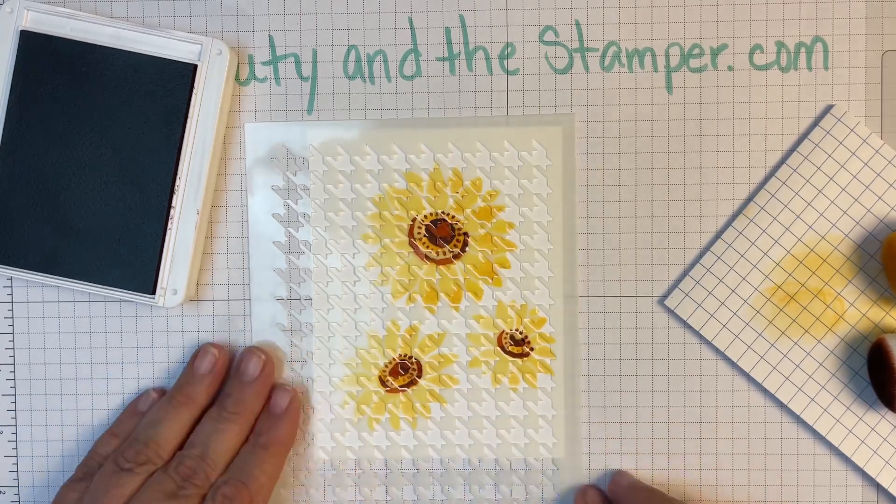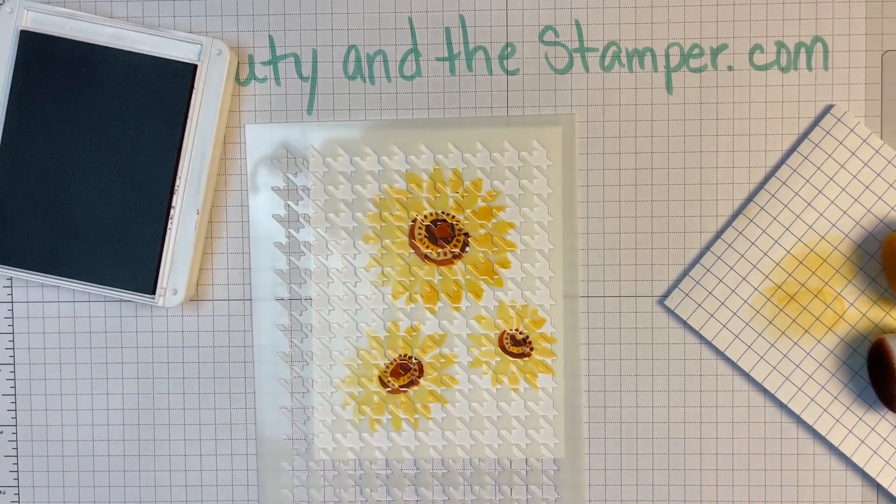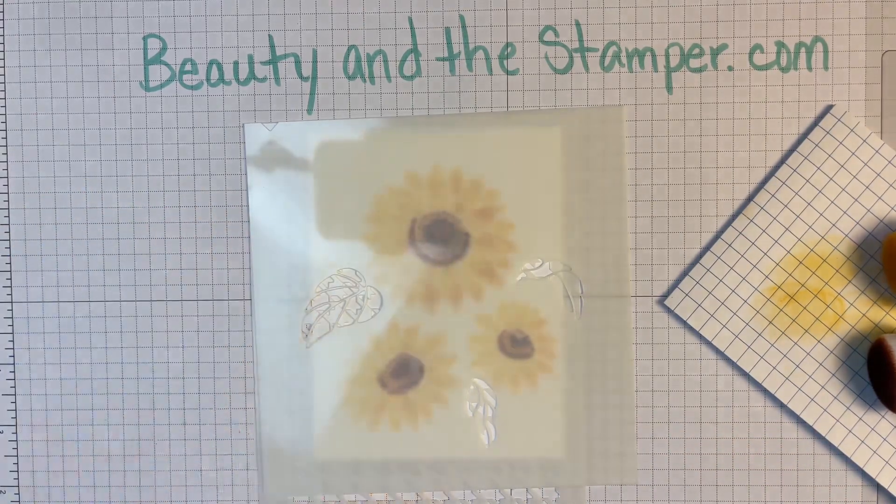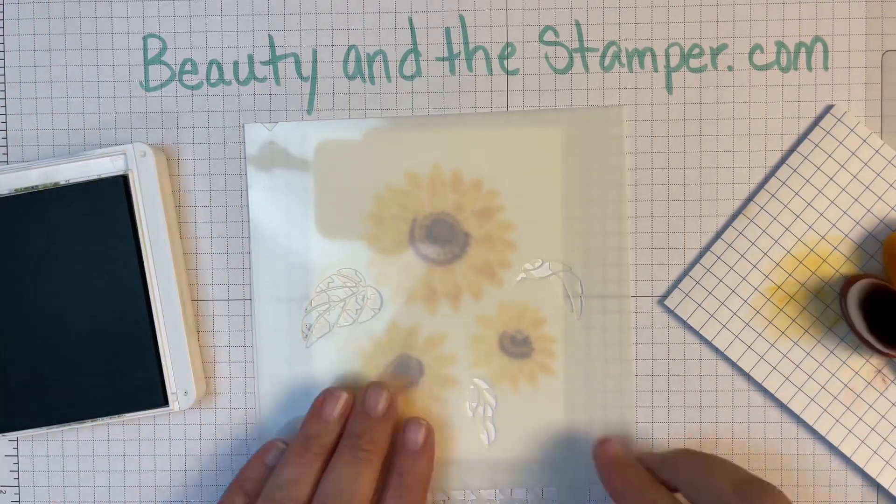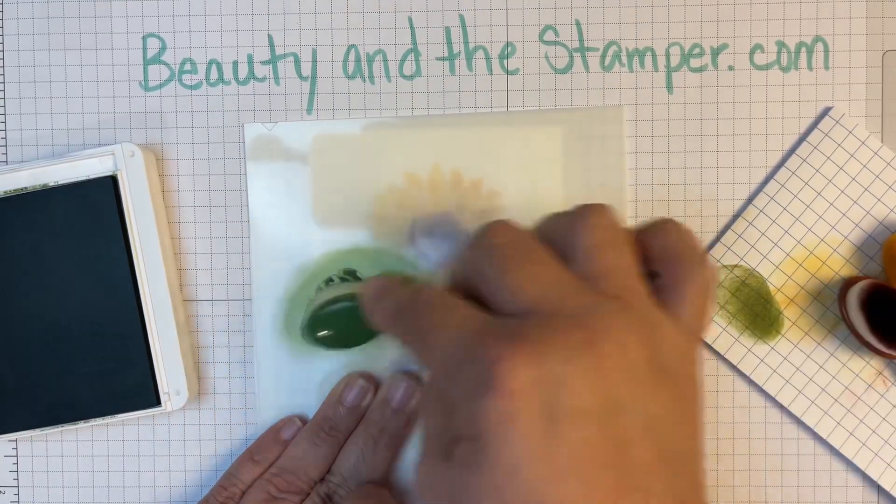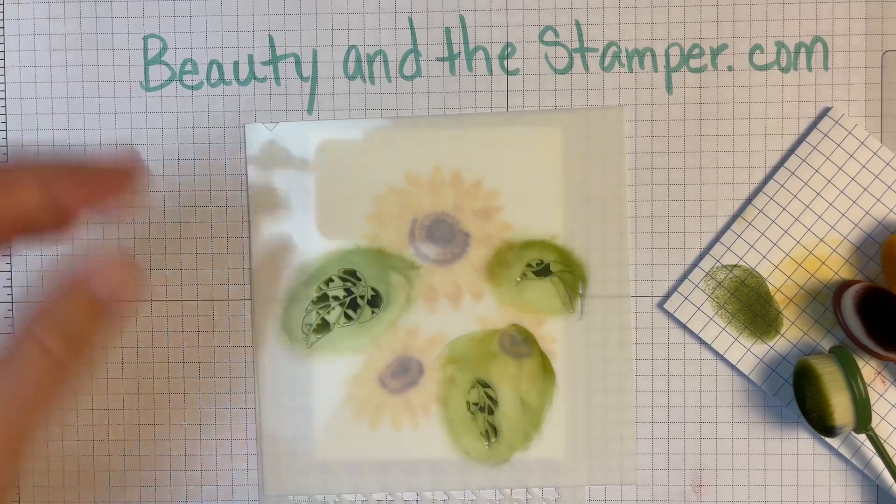Then we need to add some leaves, so I'm getting that leaf—that's mask number four—and we're going to add those in. Now remember, this is only going to do the houndstooth and that's just going to give it some added texture.